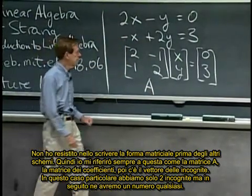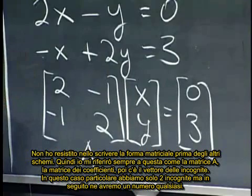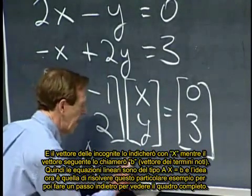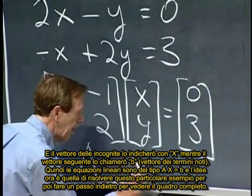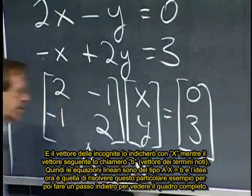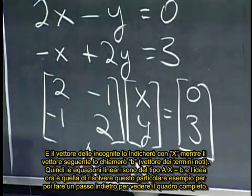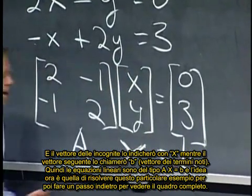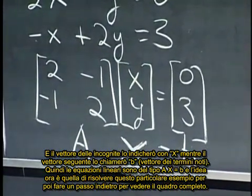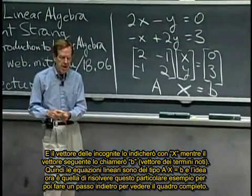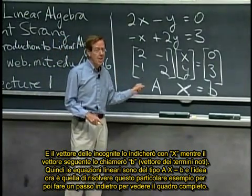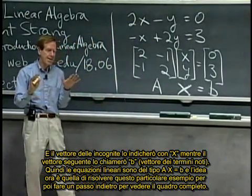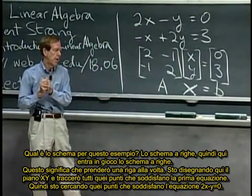So I always will think of this as the matrix A, the matrix of coefficients. Then there's a vector of unknowns. Here we've only got two unknowns. Later we'll have any number of unknowns. And that vector of unknowns, well, I'll often, I'll make that x extra bold, and the right-hand side is also a vector that I'll always call b. So linear equations are Ax equal b, and the idea now is to solve this particular example and then step back to see the bigger picture.